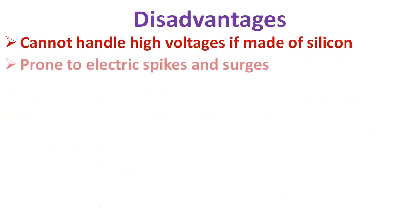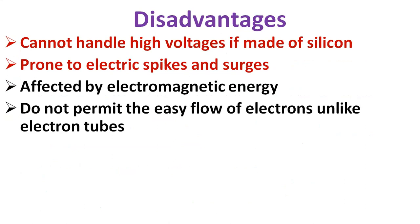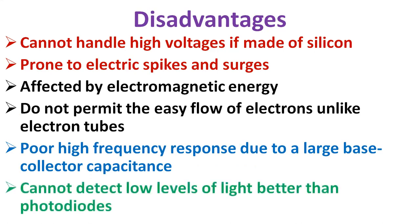The disadvantages of phototransistors include: it cannot handle high voltages if made of silicon, it is prone to electric spikes and surges, it is affected by electromagnetic energy, it does not permit any flow of electrons unlike electron tubes, poor high-frequency response due to large base-collector capacitance, and finally, it cannot detect low levels of light better than the photodiode.